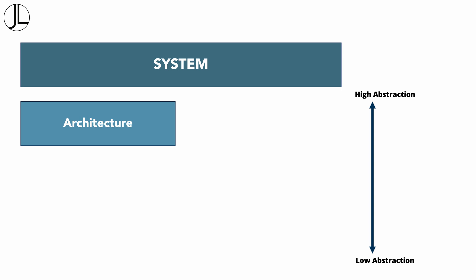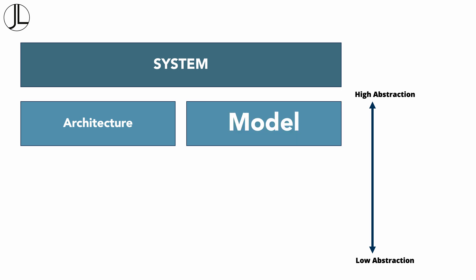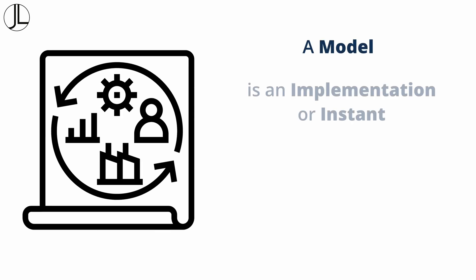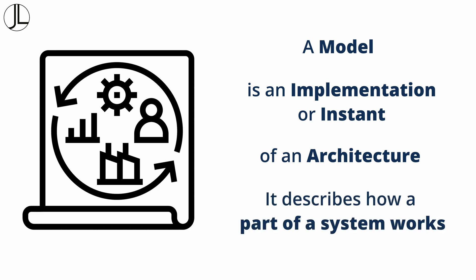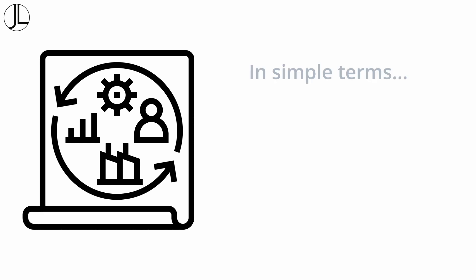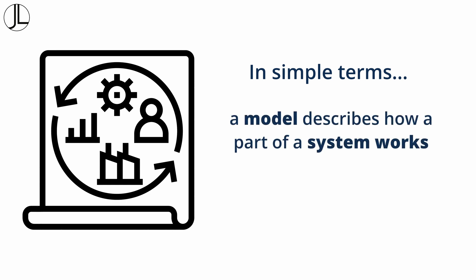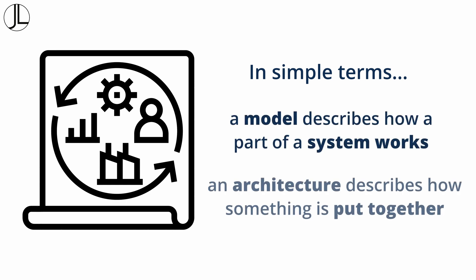The next term is model, which also means something specific. A model is an implementation, or an instance of an architecture — it describes the working parts of a system. In simple terms, a model describes how something works, whereas an architecture describes how something is put together.